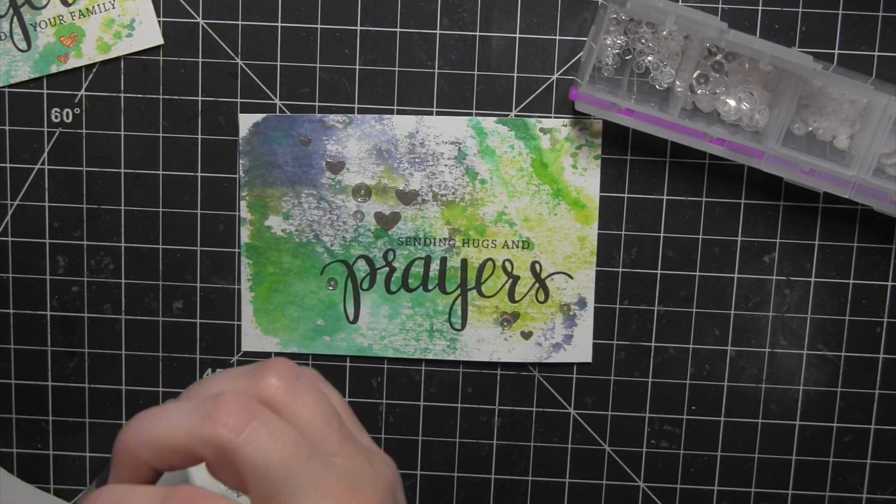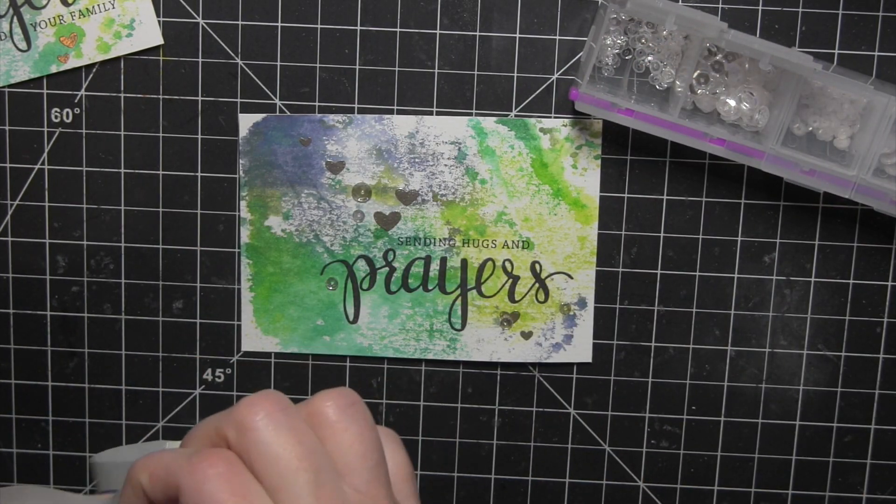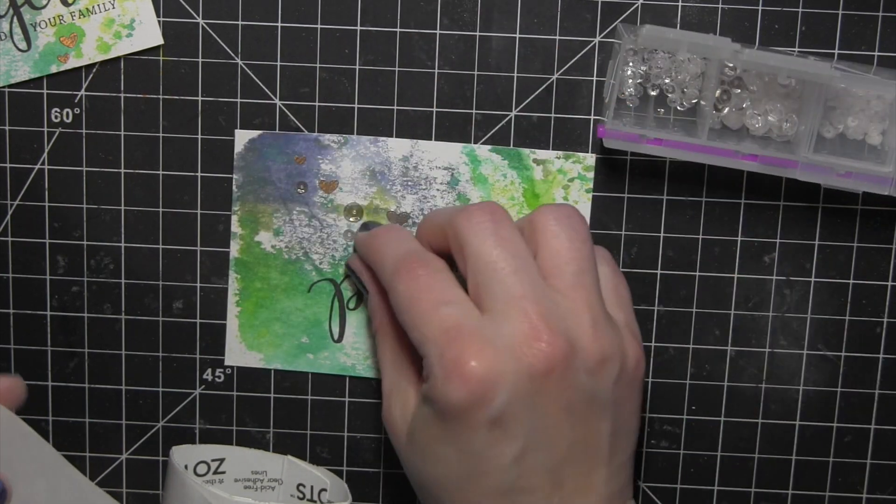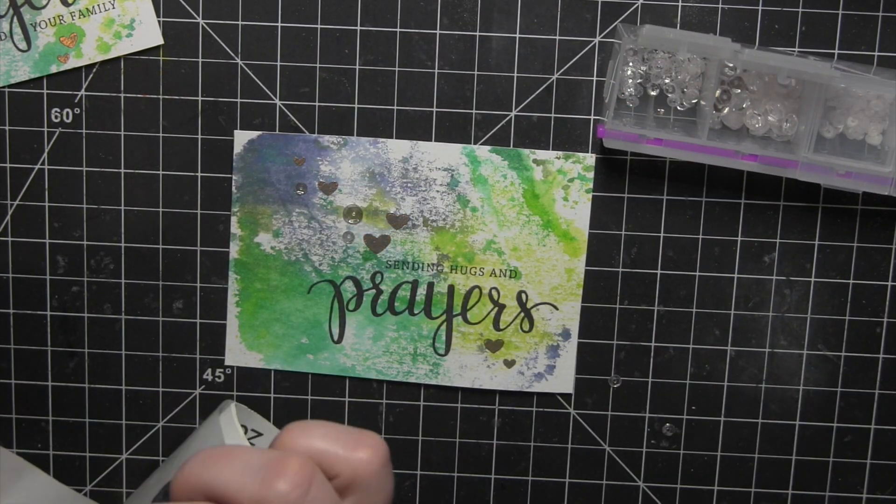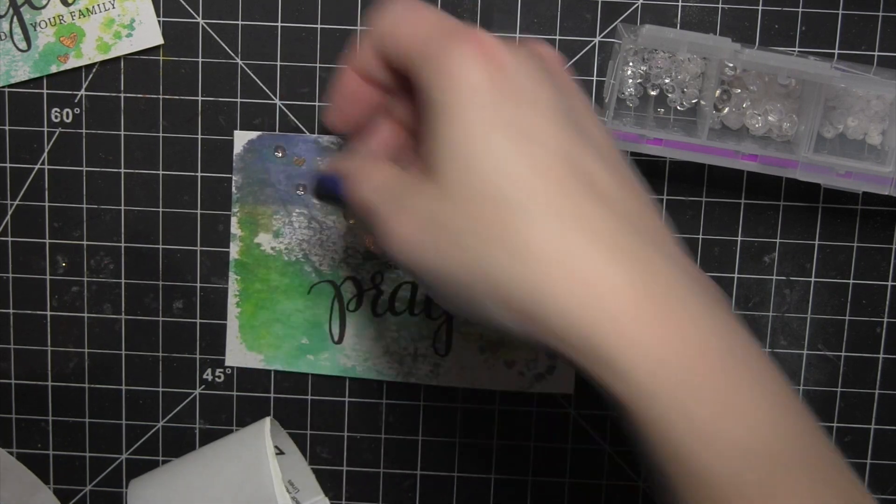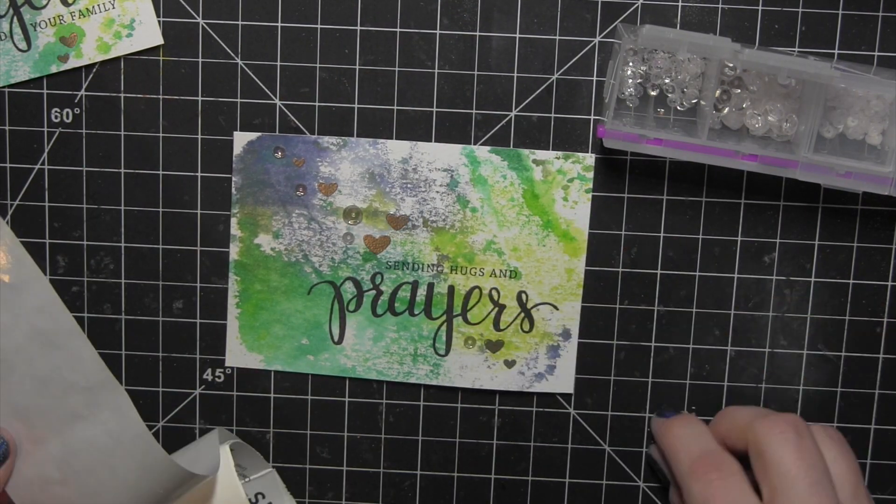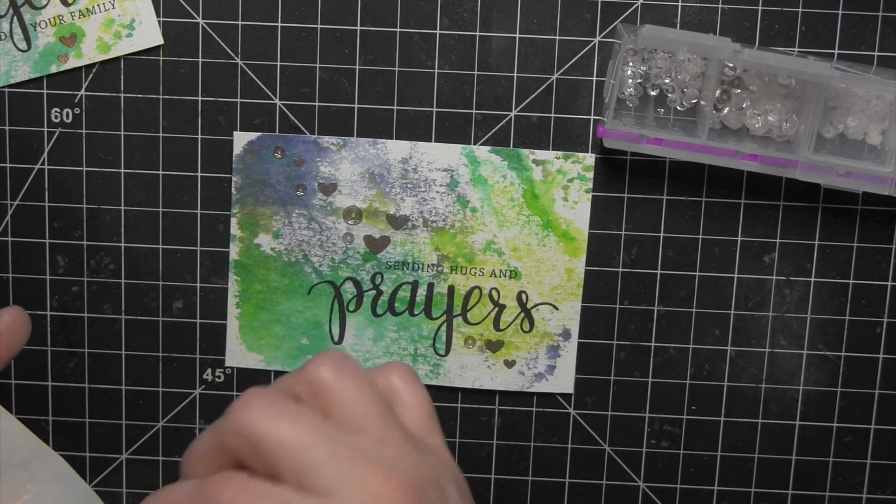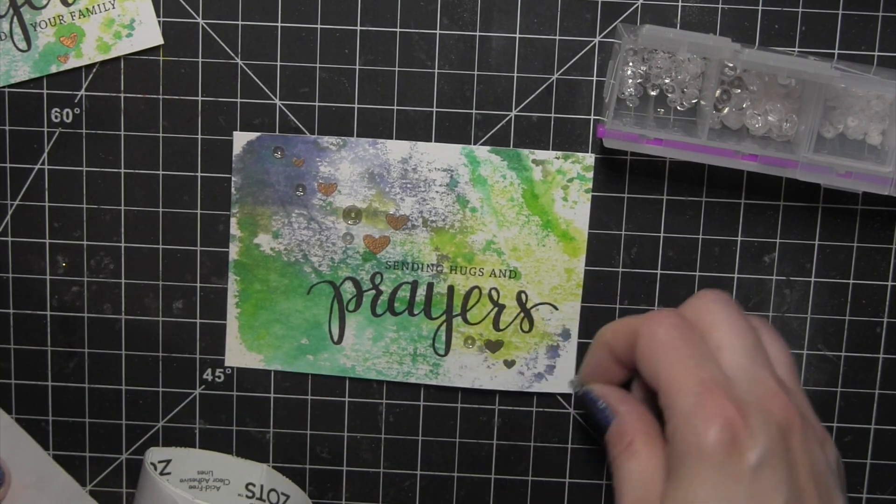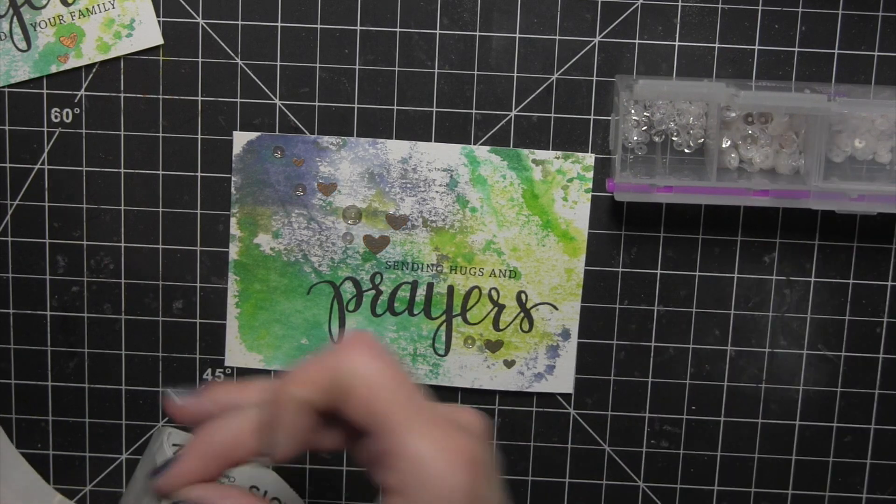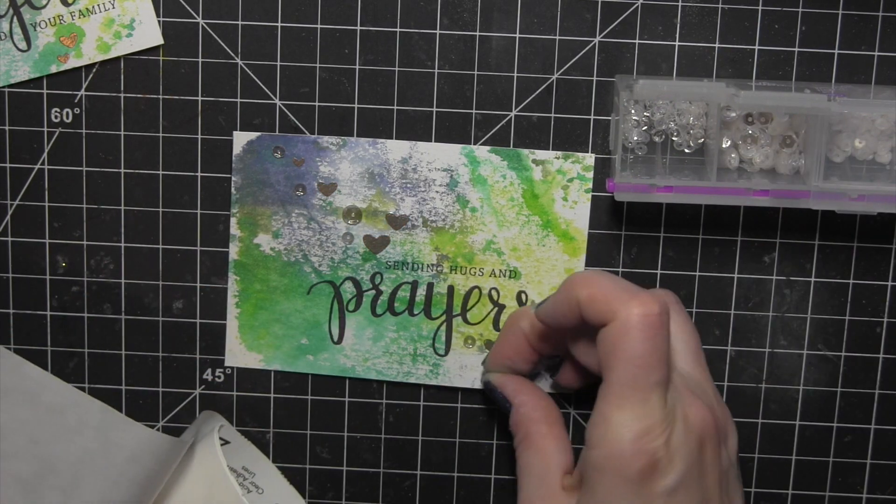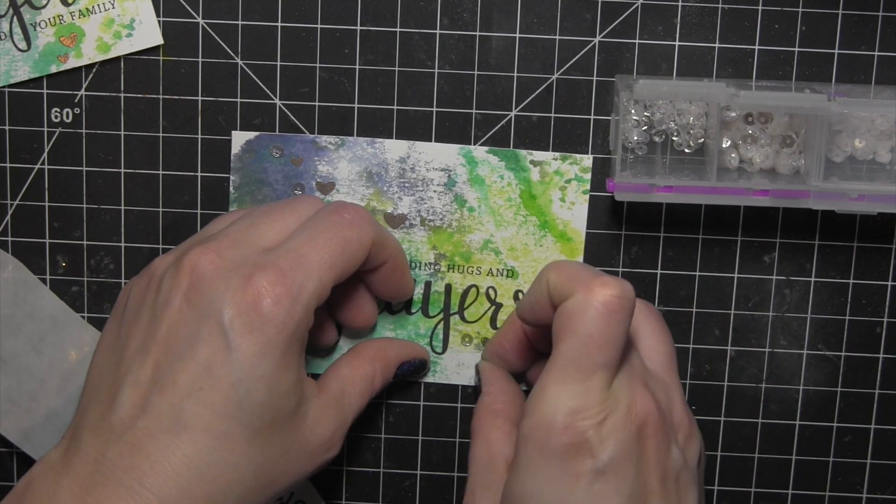After I have heat embossed those hearts there, you can see how great those look in the background, I'm going to finish with a little scattering of the Sparkling Clear Pretty Pink Posh sequins in both the 6mm and 4mm size. I will attach those with the Zotz Bling glue dots. These are little teeny tiny glue dots that work great with things like sequins. I love them so that there isn't any glue that squishes out from underneath the sequins.